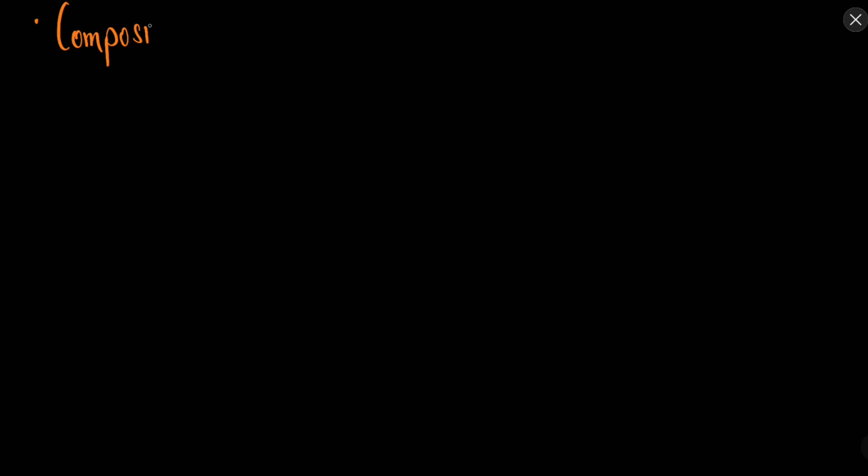It is time to discuss the composition of multiple or two SHMs. It can happen that there are two different SHMs happening at the same time, so they will superimpose with each other. We will start the composition of two SHMs. Now there can be more than two SHMs as well, but usually it is not very important at this level. We need to find the resultant — whether it is SHM or not. Usually it is another SHM.